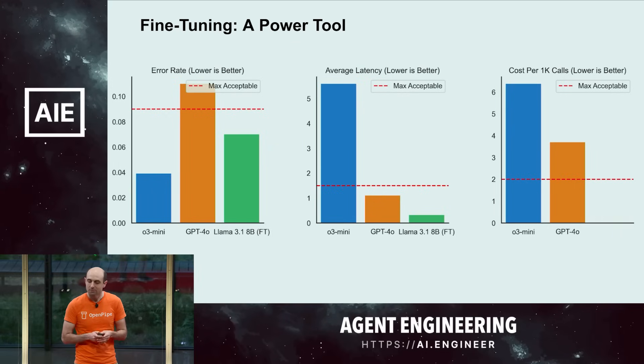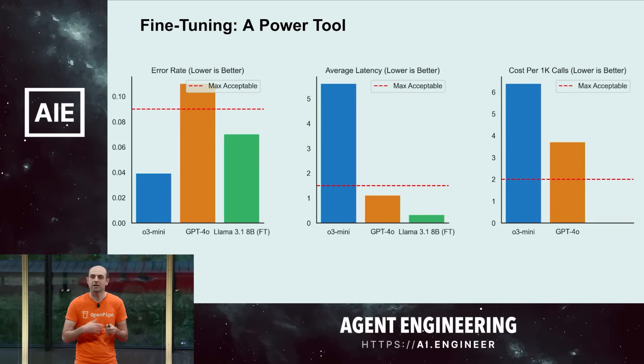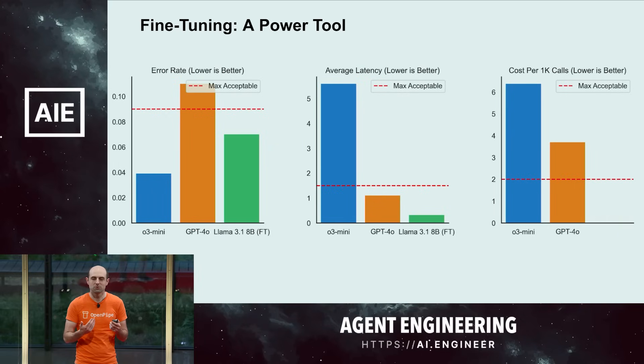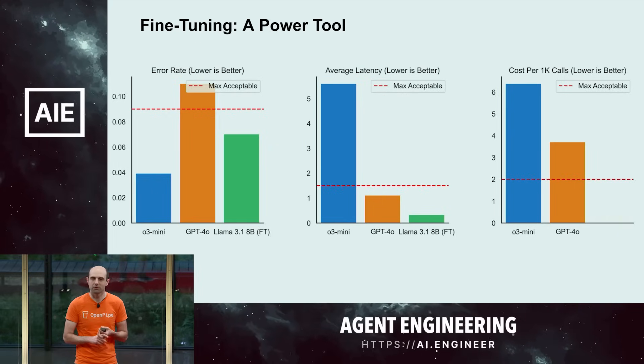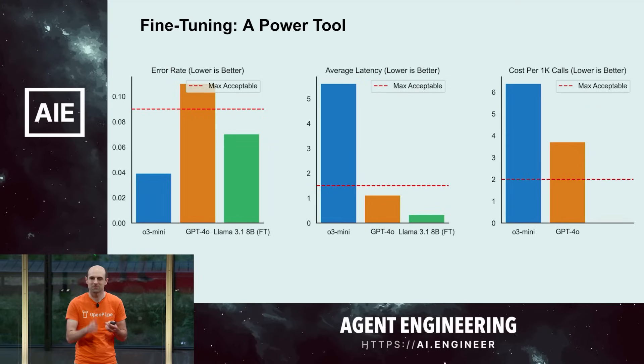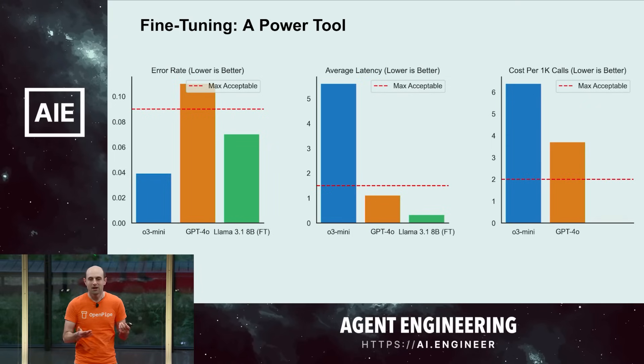This is the magic of being able to move to that much smaller model: with an 8 billion parameter model, it is way easier to deploy in a low-latency way. There are far fewer sequential calculations with fewer layers, so you get a much lower latency.